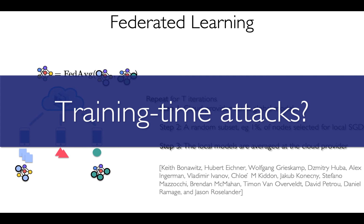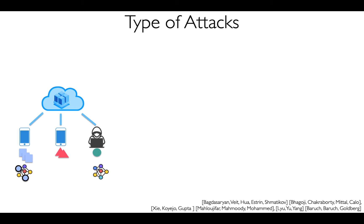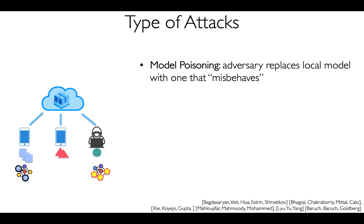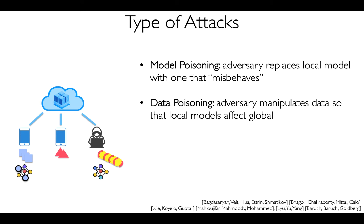The particular problem we're interested in is the effectiveness of training time attacks instigated by a small subset of adversarial nodes. We are particularly interested in the different set of attacks that one can come up with to corrupt the global Federated Learning model. In general, folks in this area consider two kinds of attacks: model poisoning, where the adversarial nodes aim to replace their local models with ones that exhibit a certain behavior, and data poisoning, where the adversarial nodes manipulate their local data sets so that the local models acquire undesirable properties.